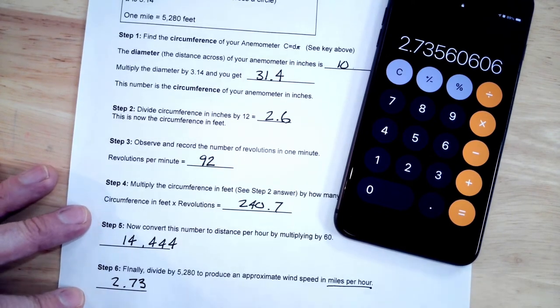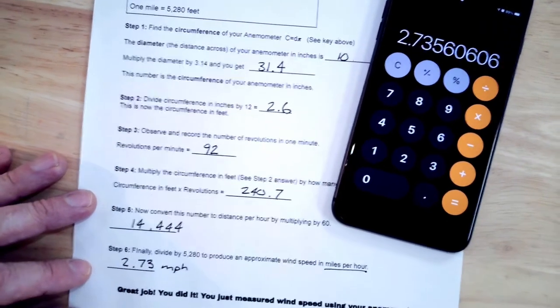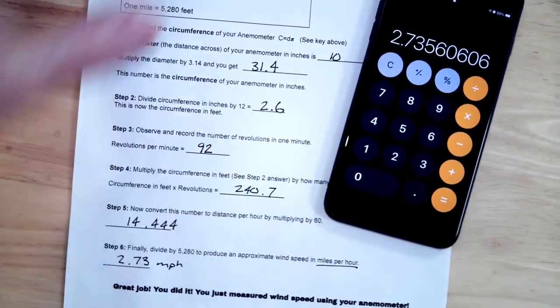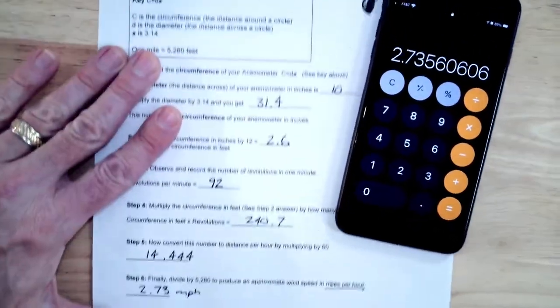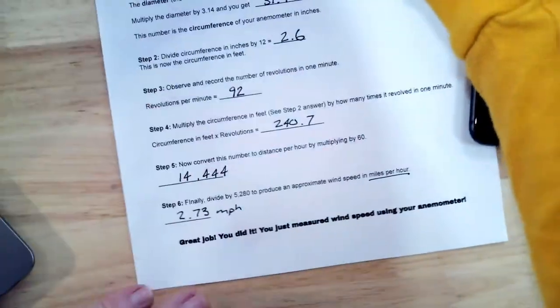That means the fan speed, whichever setting it was, was 2.73 miles per hour. So that's your anemometer actually measuring the wind speed, whether you're outside or using artificial fans. So that is how you figure that out.